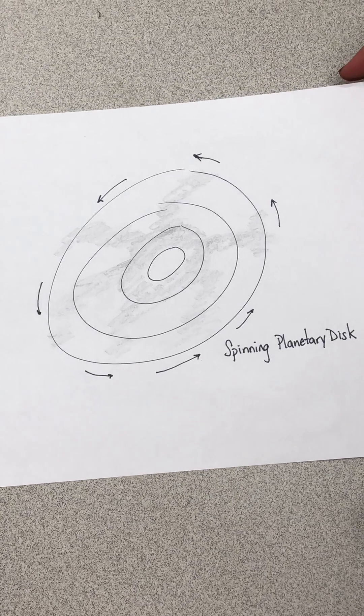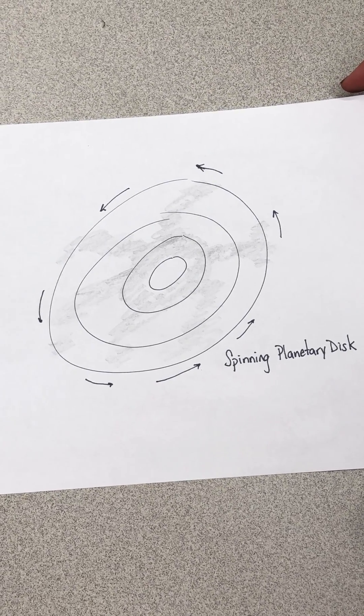The nebula started to spin. As it spun faster, it collapsed in on itself and started to spin even faster.